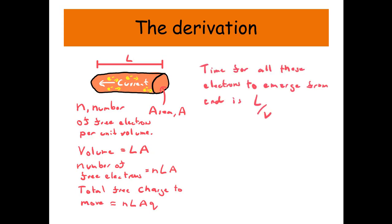Now the time part of our equation, so now we're looking at, so we know I equals Q over T. Now we're looking at the time part. Well the time for all these electrons to emerge from the end is L over V.